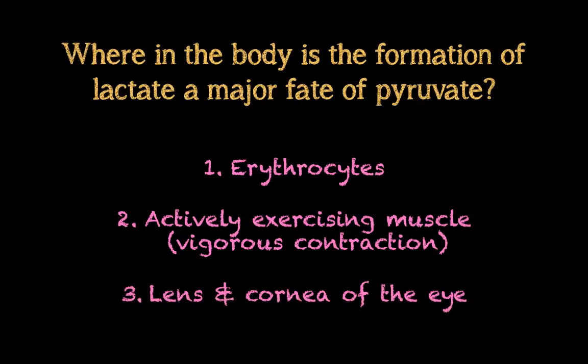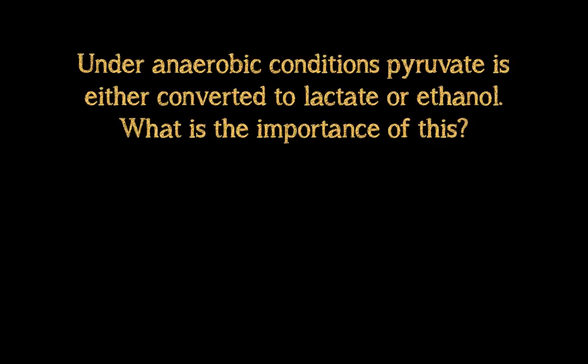The third place is the lens and cornea of the eye. Light rays come into the eye, and you don't want blood vessels there causing reflection, so the lens and cornea are poorly vascularized. Therefore, not much oxygen reaches them, and they rely on converting pyruvate to lactate.